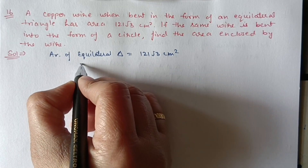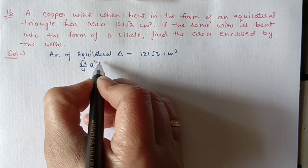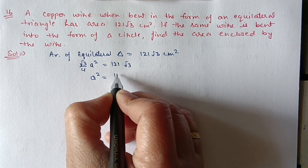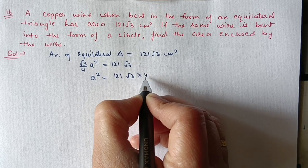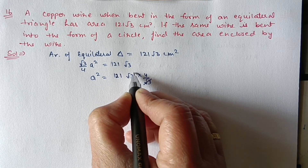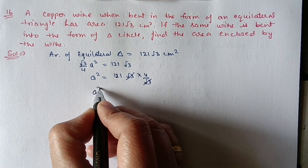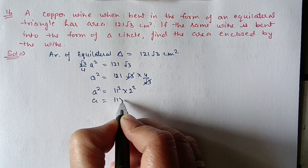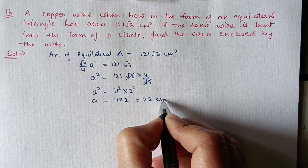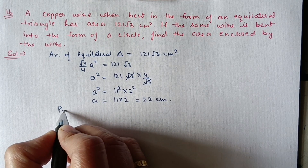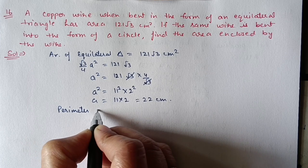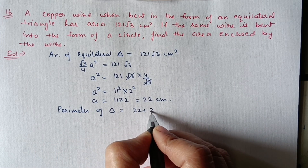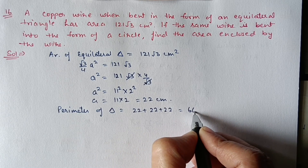Area of equilateral triangle = (√3/4)a² = 121√3. So a² = 121√3 × 4 / √3. The √3 cancels out, giving a² = 484 = 11² × 2² so a = 22 centimeter. Perimeter of equilateral triangle = 3 × 22 = 66 centimeter.